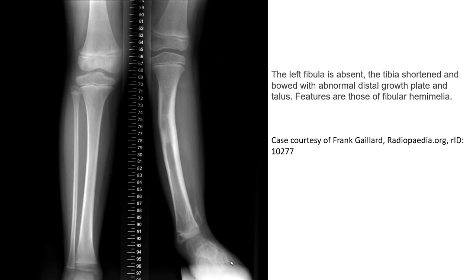This is the case example of fibula hemimelia, in which the left fibula is absent. It appears as a short bone with abnormal distal growth plate and talus.